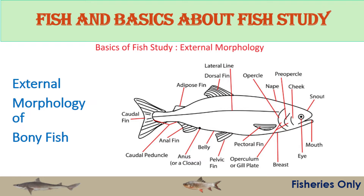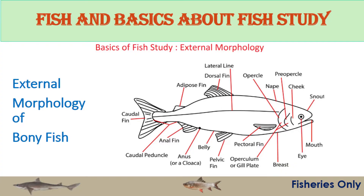Fish have a pair of eyes, one on either side of the body. In flat fishes, both eyes may be shifted to one side. The breast is the ventral side portion just behind the head. The head region extends from the uppermost part of the head to the end of the operculum. It consists of the snout, which is the part of the head in front of the eyes.